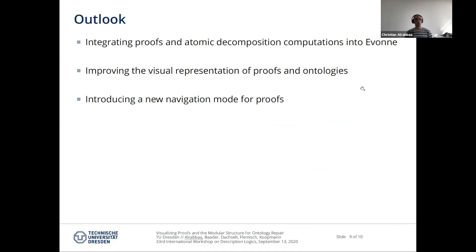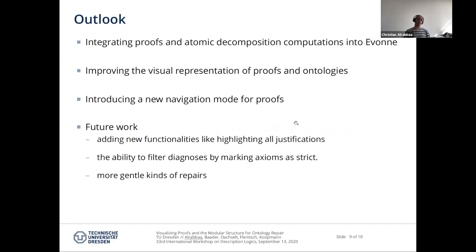This is a list of implemented features we have so far. What we are currently working on is integrating the computation of proofs and atomic decomposition into the tool and improving the visual representation. We also want to introduce another navigation mode for proofs. As future work, we would like to highlight all justifications of any selected axiom in a proof, filter diagnoses based on certain trusted axioms that we don't want changed, and consider different ways of repair such as gentle repairs. Thank you.